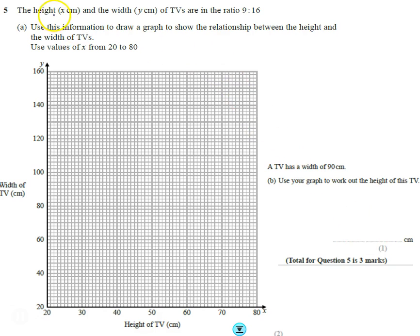It tells us the height and width of TVs are in the ratio 9 to 16. So if you think about a widescreen TV, it's wider than it is tall. So it's 9 wide, sorry 9 tall, 9 high, 16 wide. So we just confuse matters a little bit about the height going across the bottom and the width going up the side. But okay, it just follows that rule here. We need to use this information to draw a graph to show the relationship between the height and the width. The values of x from 20 to 80.